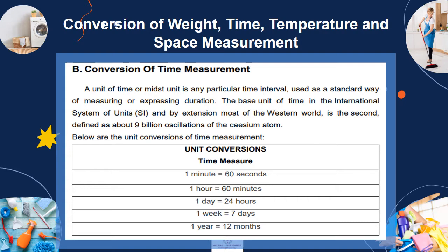Letter B: Conversion of Time Measurement. A unit of time is any particular time interval used as a standard way of measuring or expressing duration. Below are the unit conversions of time: 1 minute is equal to 60 seconds; 1 hour is equal to 60 minutes; 1 day is equal to 24 hours; 1 week is equal to 7 days; and 1 year is equal to 12 months.